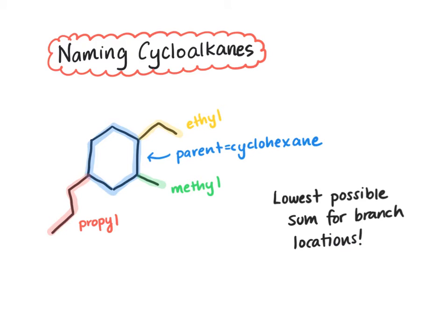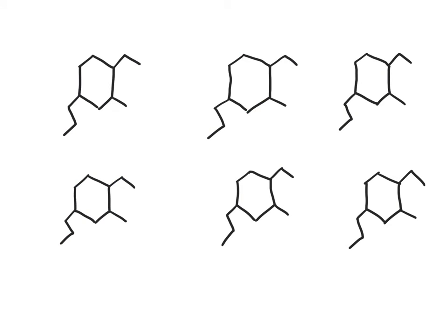So I'm going to redraw the structure on the next slide and we're going to go through the different numbering mechanisms that we could and see which one is our lowest possible sum. All right, so I've drawn six different structures because there's six different numbering motifs that could happen here. I'm going to quickly go through each one.